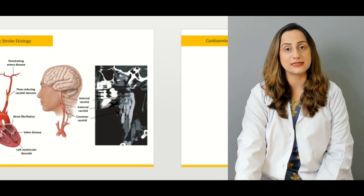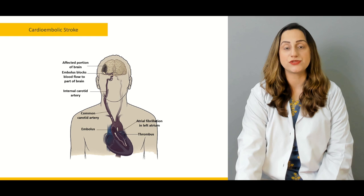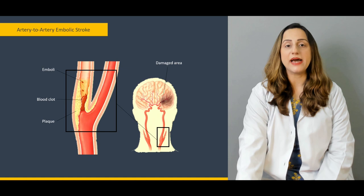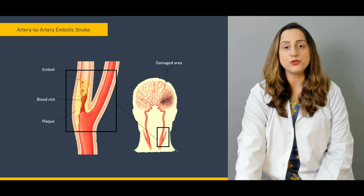The particular cascade of events that take place whenever there is atrial fibrillation or an event of atrial flutter will be discussed in detail. Then we're going to go through the mechanisms of artery-to-artery embolic stroke — how it takes place, what the pathophysiology is, and what risk factors contribute and make a person more prone to the development of ischemic events.